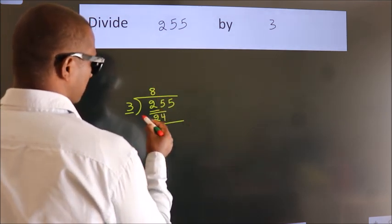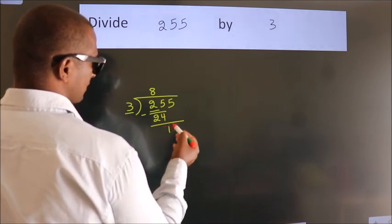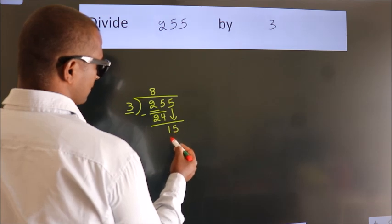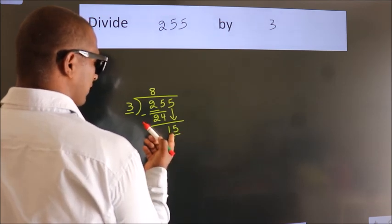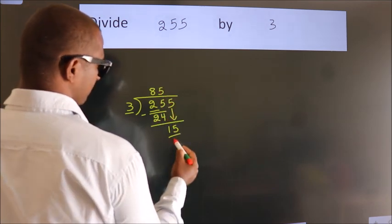Now we should subtract. We get 1. After this, bring down the next number. So 5 down, giving us 15. When do we get 15? In the 3 table, 3 times 5 is 15.